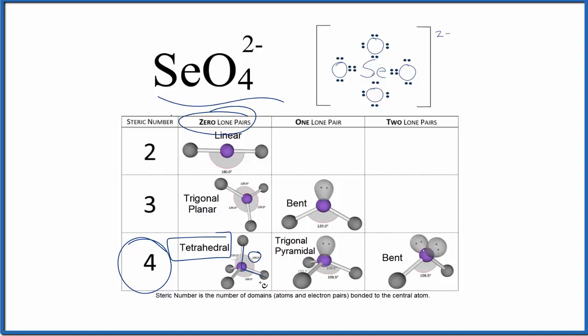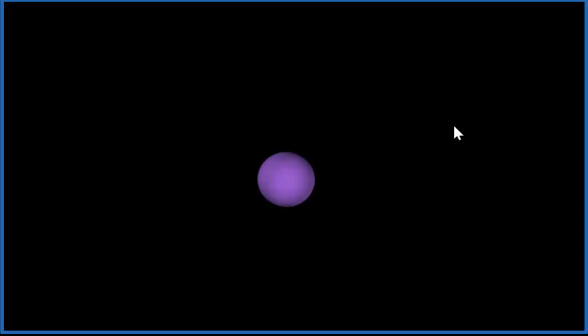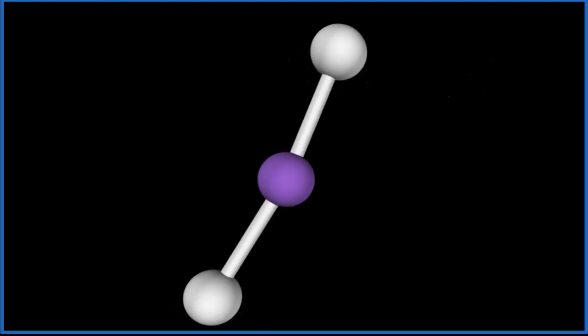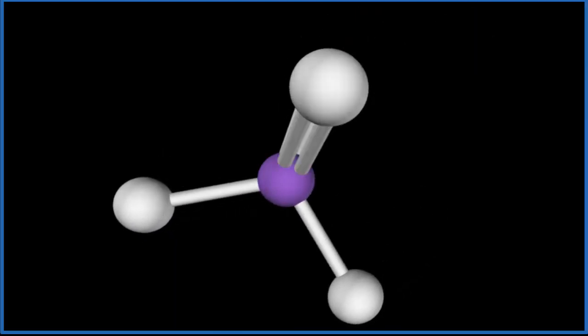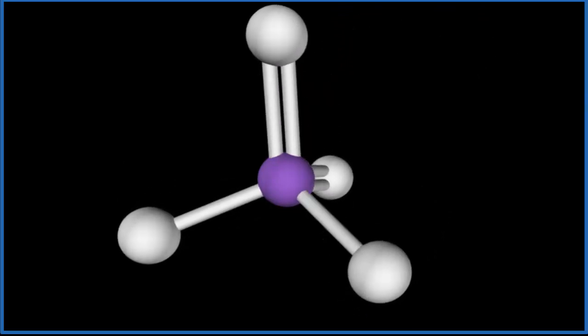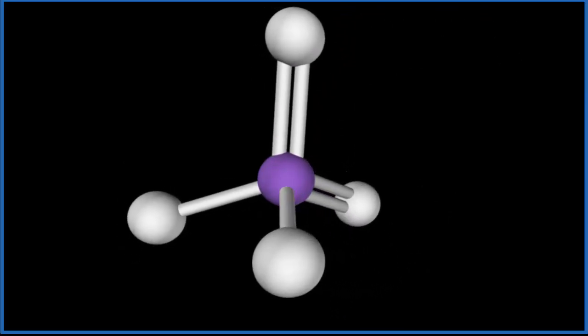Let's look at this in three dimensions. We'll consider the purple sphere here as the central selenium atom. We have four oxygen atoms: two of them are single bonded and they spread out as far away as they can from each other, and then we have the two double bonds. That gives us what we call a tetrahedral molecular geometry.